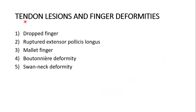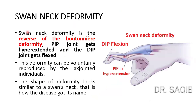I have started a series of lectures on tendon lesions and finger deformities. I've discussed already these four and this is the last one: swan neck deformity, the reverse of the boutonniere deformity. Proximal interphalangeal joint gets hyperextended and the distal interphalangeal joint gets flexed. This deformity can be voluntarily reproduced by lax-jointed individuals. The shape of the deformity looks similar to a swan's neck — that is how the deformity got its name.